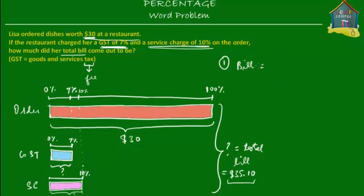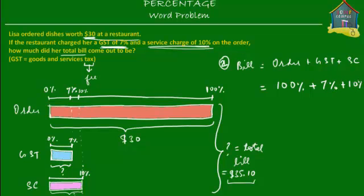Total bill equals order plus GST plus service charge. This is method number two. Lisa had to pay 100% of the cost of the order, plus 7% GST, plus 10% service charge. Adding all these percentages gives 117%. That's 117% of the order, because the GST is charged on the order, the service charge is also charged on the order, and 100% is of course 100% of the order.